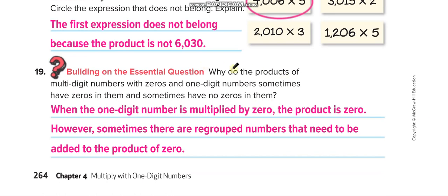Why do the products of multi-digit numbers with zeros and one-digit numbers sometimes have zeros in them and sometimes have no zeros in them? When the one-digit number is multiplied by zero, the product is zero. However, sometimes there are regrouped numbers that need to be added to the product of zero.